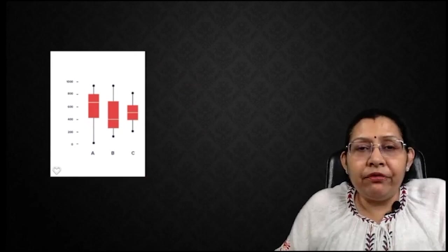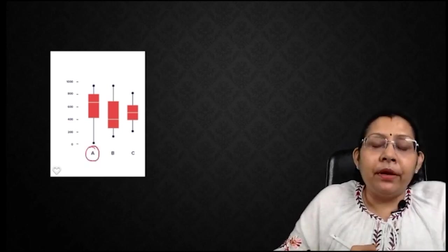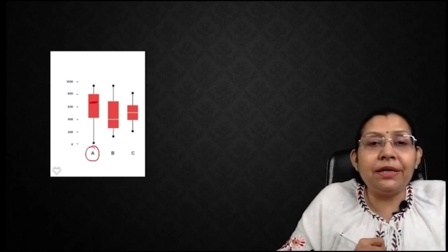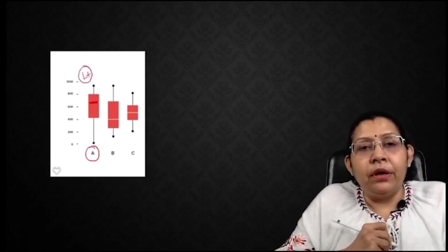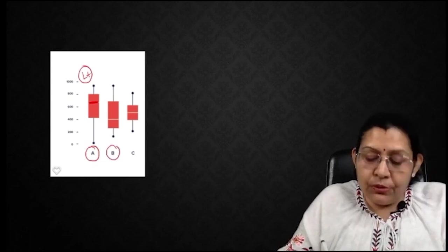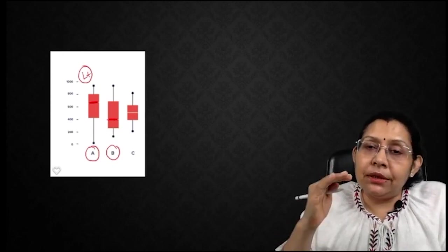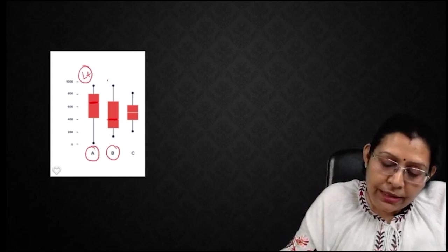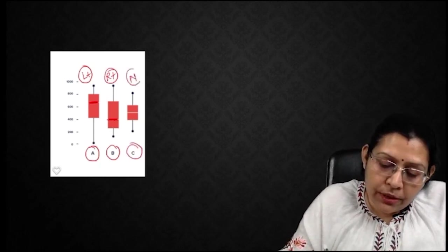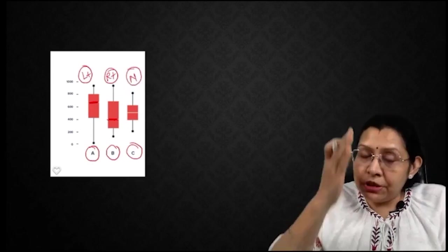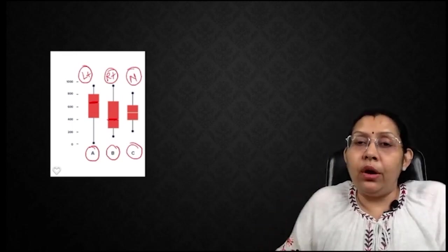If you try to identify symmetry in a given vertical plot: in graph A, the line in the box is towards the upper side, so maximum values are towards the upper side — this is left skewed deviation. In graph B, the line in the box is towards the lower side, so maximum values are towards the lower side — this is right skewed deviation. If the line in the box appears at the center in graph C, this is a normal distribution pattern. So in vertical box and whisker plots, the interpretation is the same as in horizontal plots.